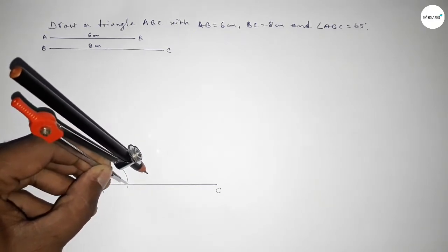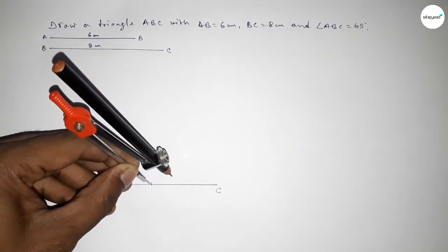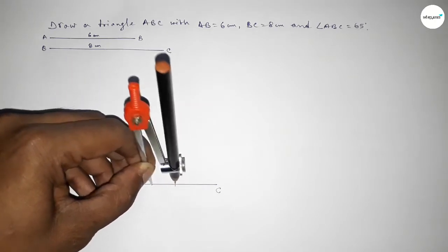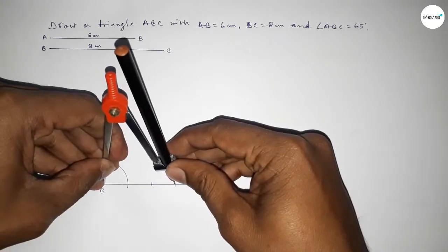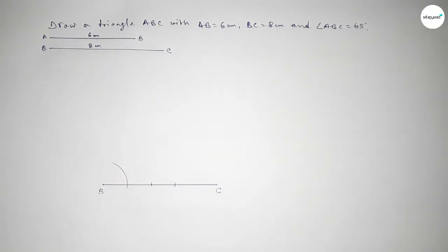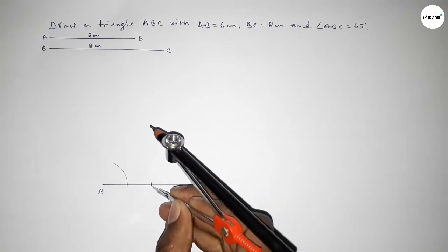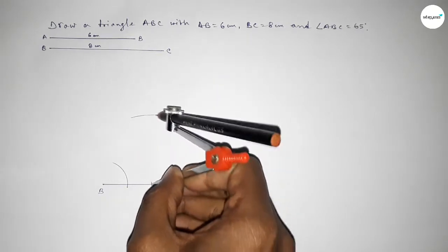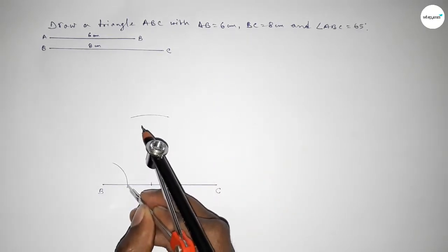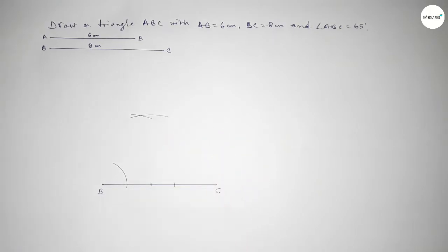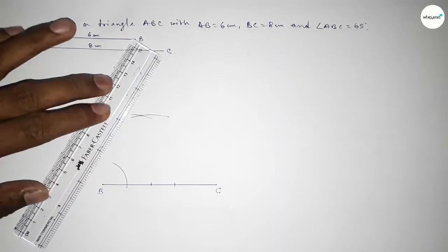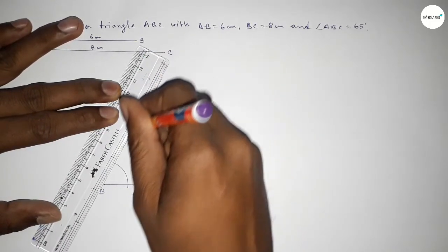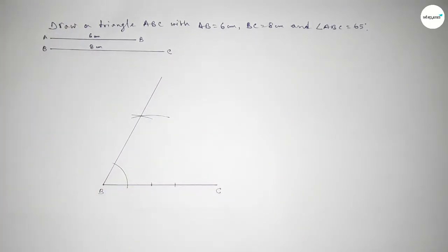With the same length, putting the compass here and cutting here, then putting the compass here and cutting here again. Now taking the length from point B to this point, putting the compass here and drawing an arc, then with the same length putting the compass here and cutting here so both curves intersect at a point.